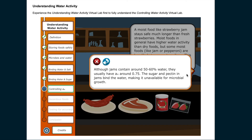Although jams contain around 50 to 60 percent water, they usually have a water activity of around 0.75. The sugar and pectin in jams bind the water, making it unavailable for microbial growth.